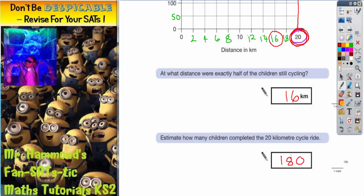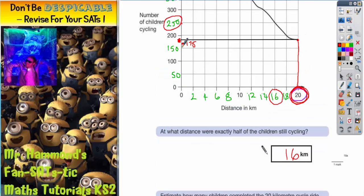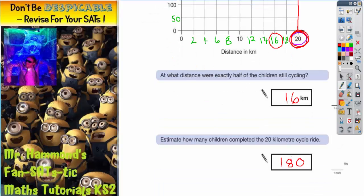Because it's an estimate, we would accept more than one answer, but as long as it's between 175 and 200, then it's a good estimate. So my estimate is 180. And there we go.